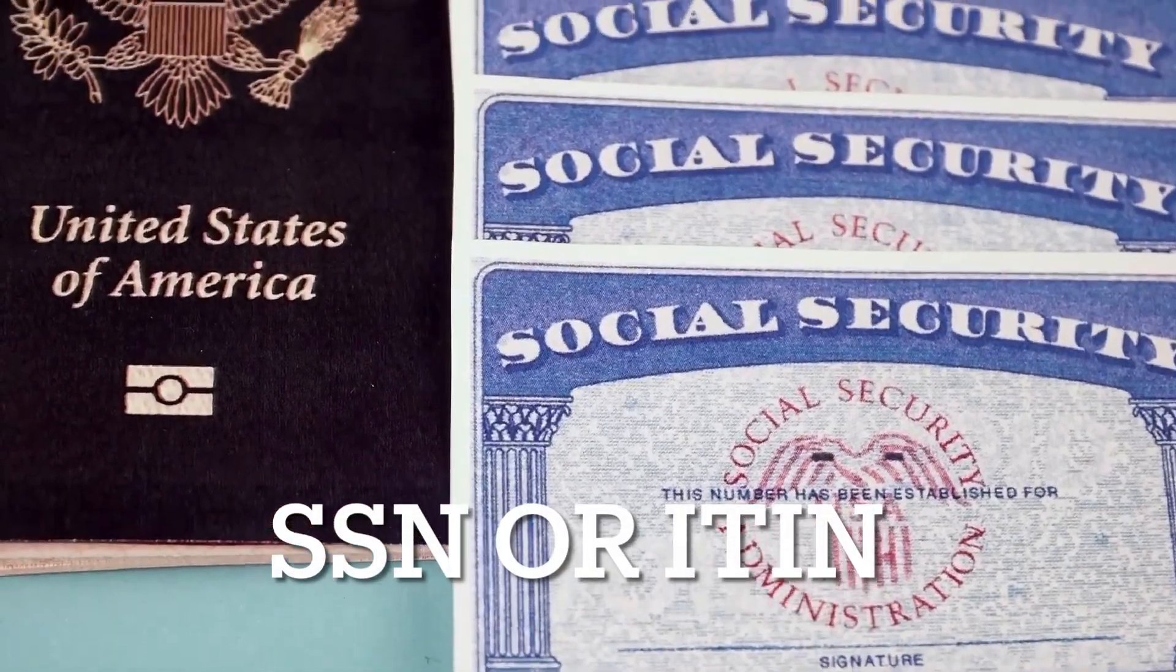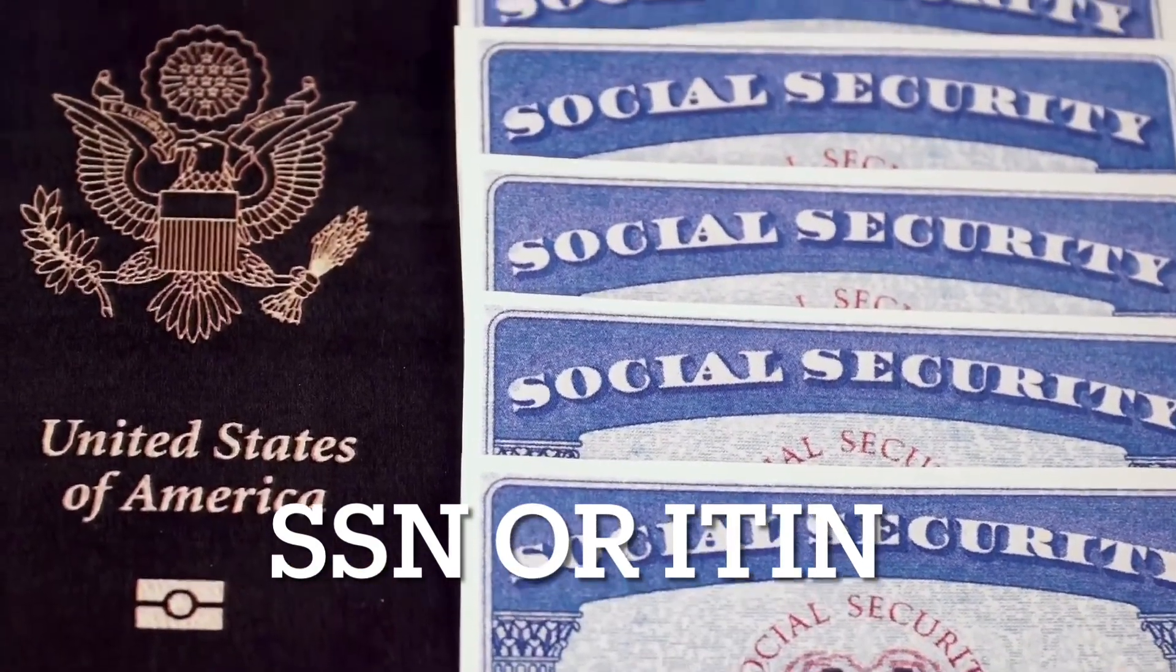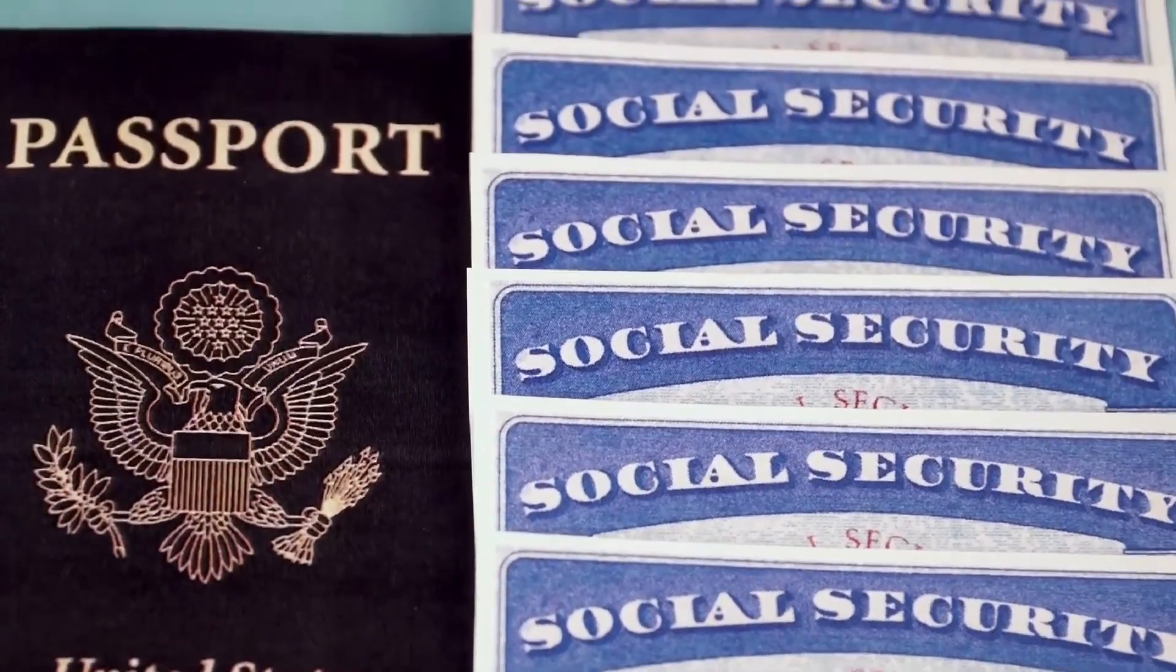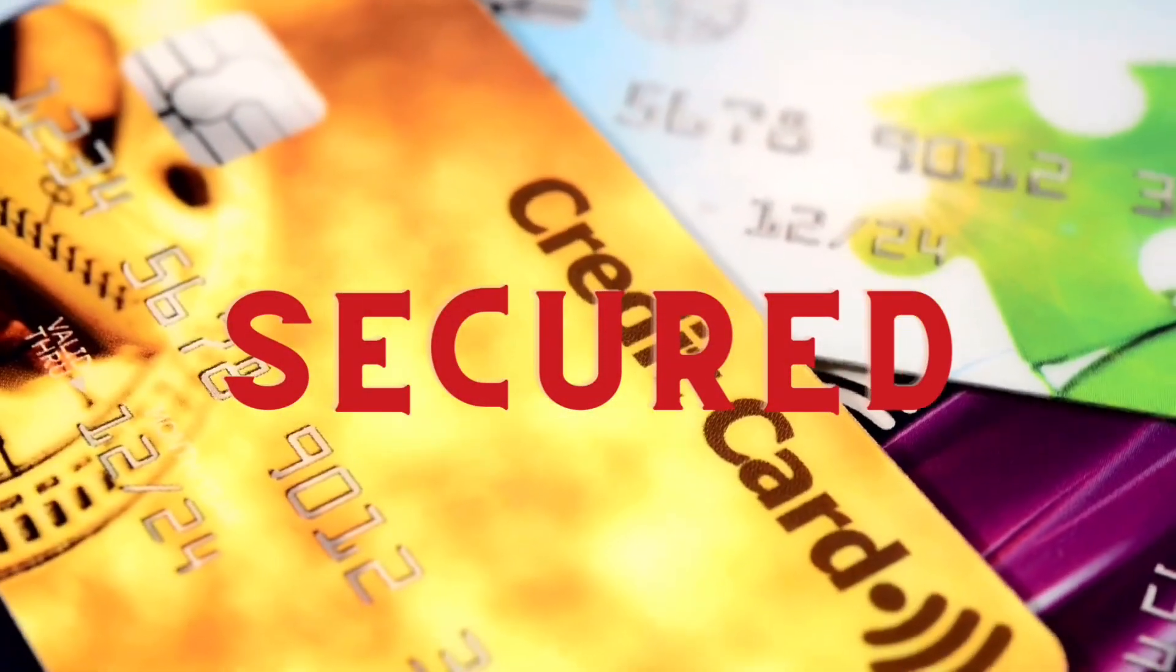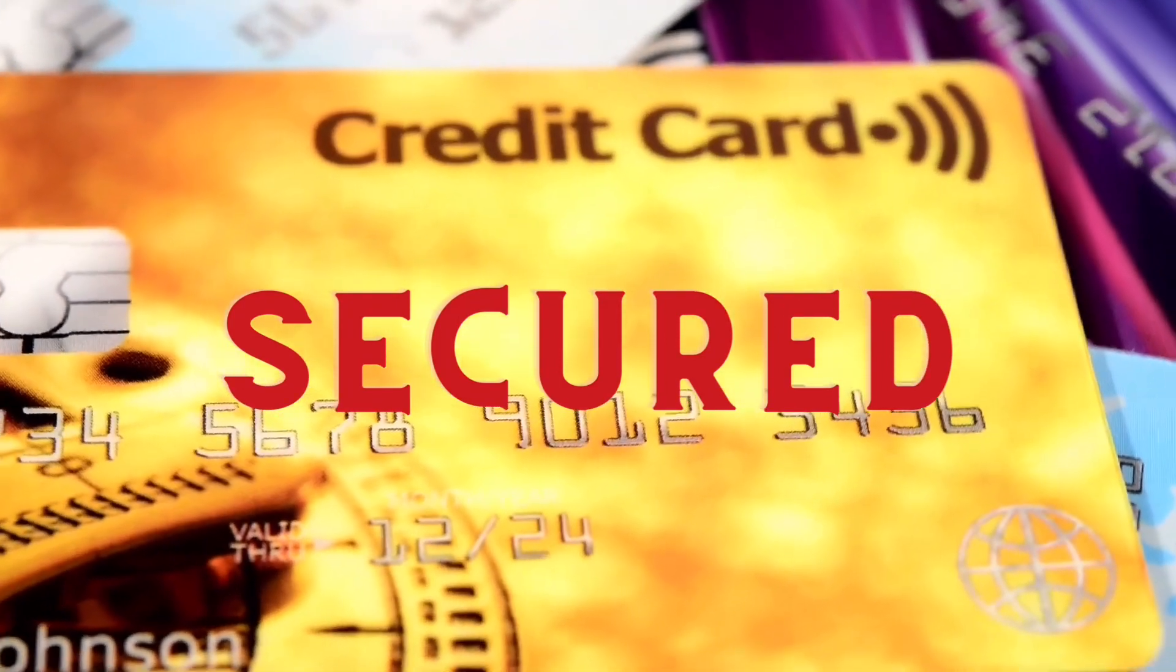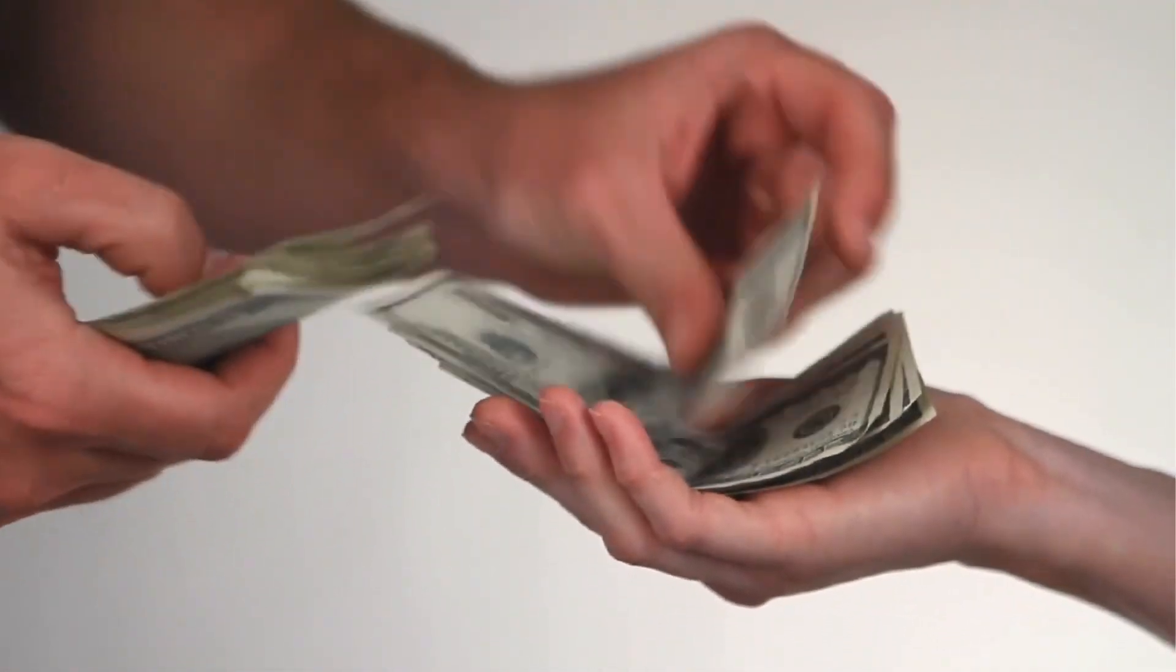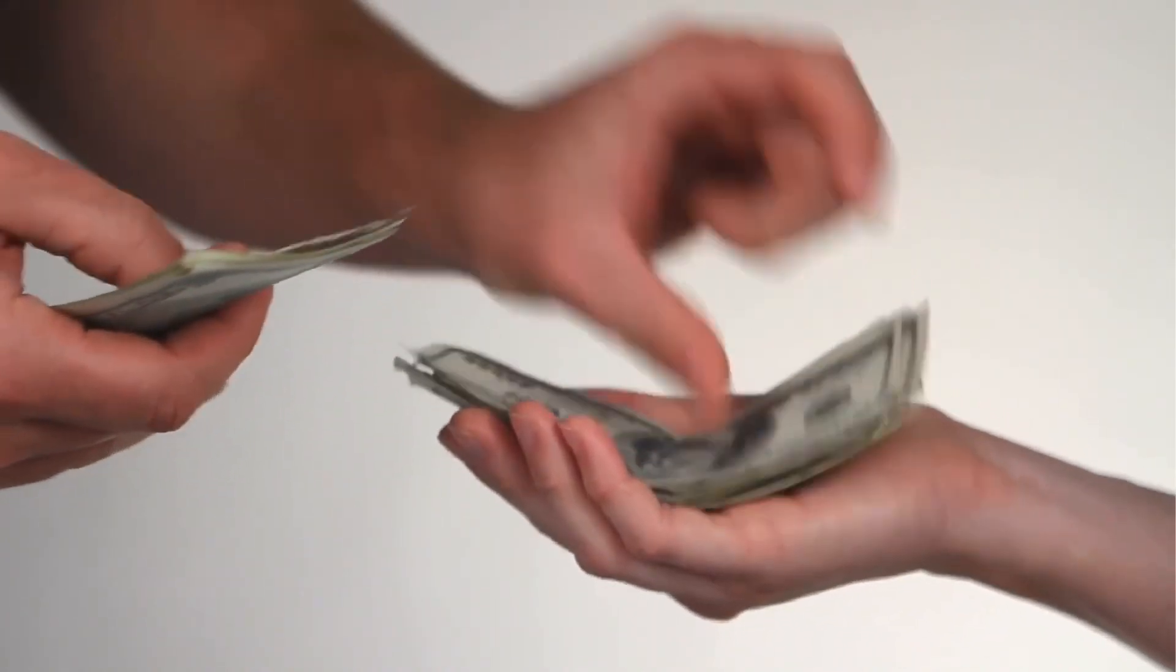But before you apply for a credit card, you will need a social security number. Or if you don't have a social security number, you can use ITIN or individual taxpayer identification number. One option that's available is to apply for a secured credit card. A secured credit card is a type of card that requires the borrower to put down a cash security deposit as collateral. The secured credit card issuer will determine the deposit amount. It can be anywhere from 250 or more dependent on the credit card issuer.